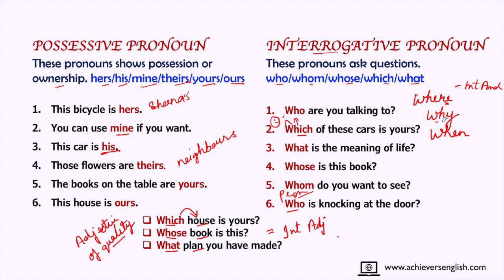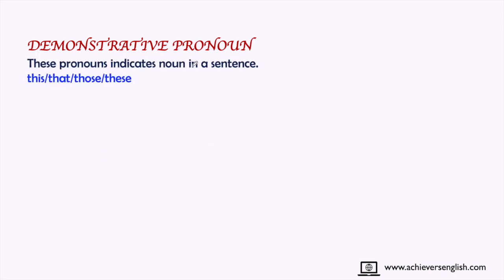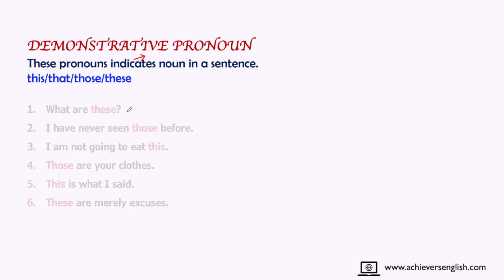I will talk about interrogative adverbs in a dedicated video, so please watch that too. Next: demonstrative pronouns. These pronouns indicate or point out a noun in a sentence. The words this, that, those, and these are used to indicate something. For example, 'What are these?' — if mangoes are on the table and we point to them, 'these' means the mangoes.